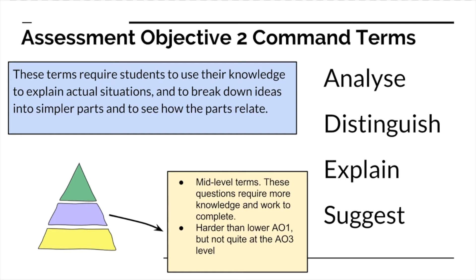As you move up in terms of complexity, you're going to find you have to do more at the second level. Assessment objective two command terms require students to use knowledge and explain actual situations, break down ideas into simpler parts, and see how these parts relate to one another. They require more knowledge and work to complete — they're harder than AO1, but not quite AO3. The terms analyze, distinguish, explain, and suggest require you to focus more and give more reasoning as to why you provide certain answers.